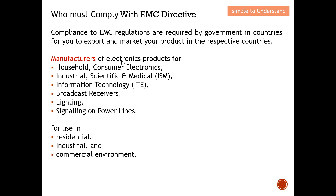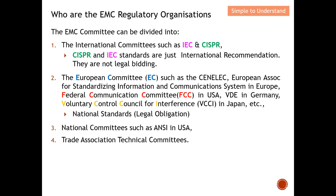In short, manufacturers of electronic products must comply. Products can be classified by environment: residential, industrial, or commercial. Any electronic product must comply with the EMC directive. The EMC regulatory organizations include international bodies such as IEC and CISPR — these are international committees without direct enforcement authority, providing recommended standards to follow.